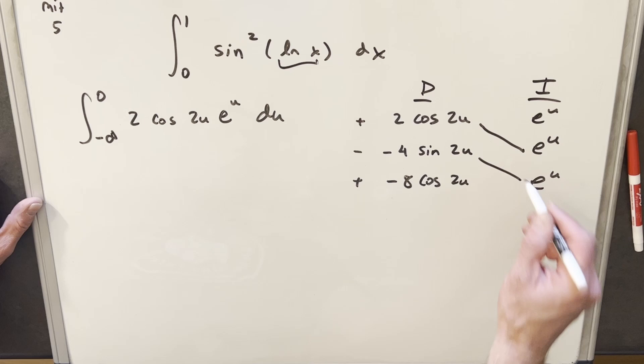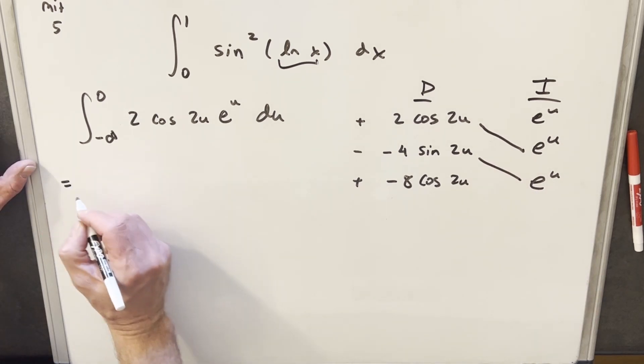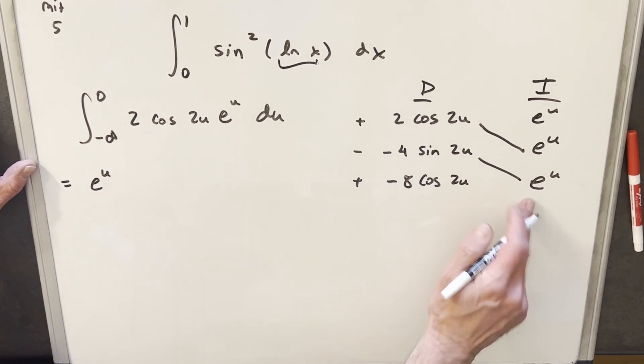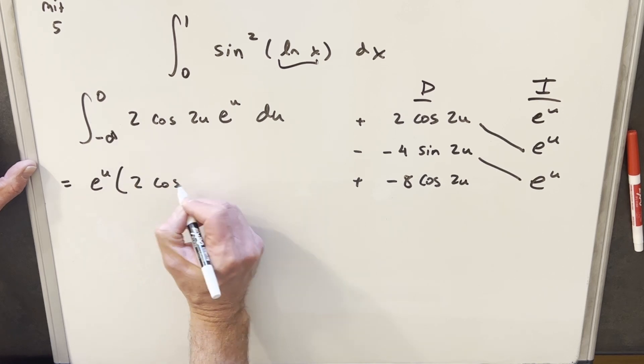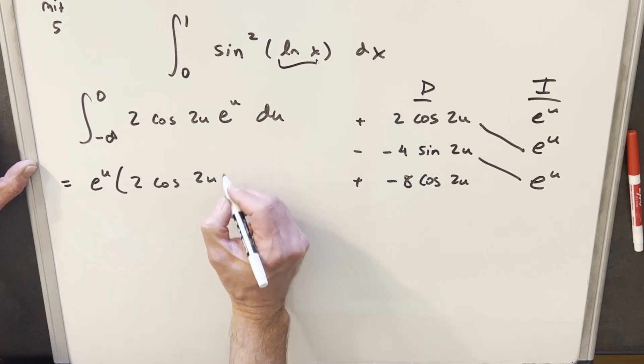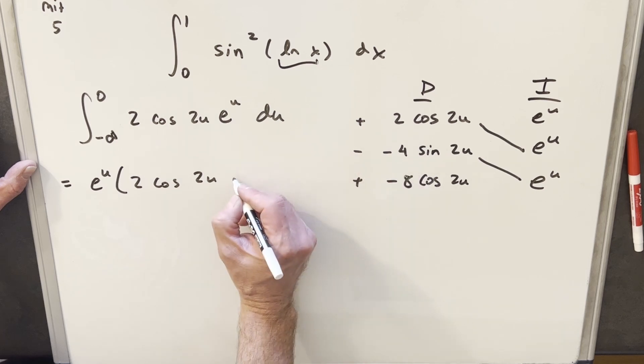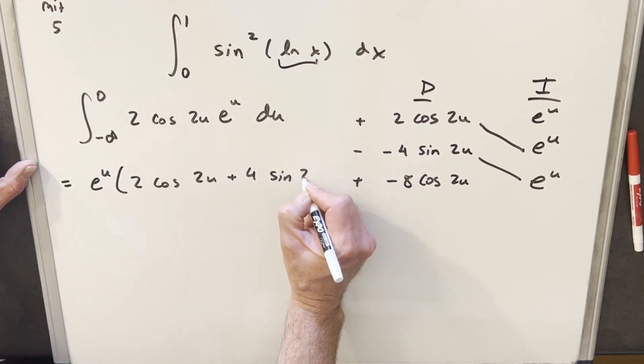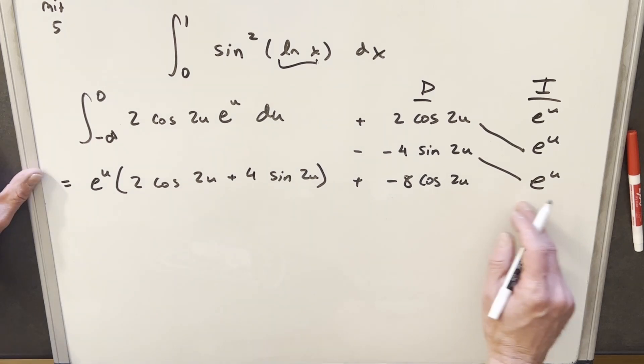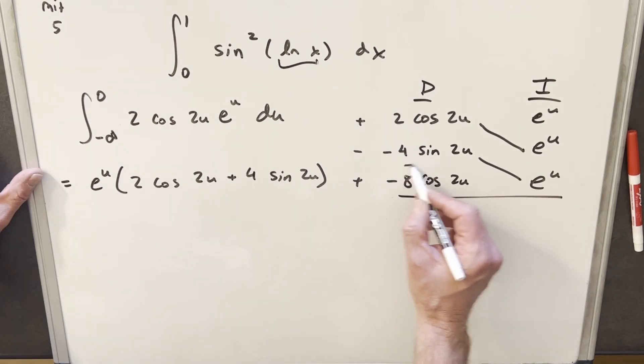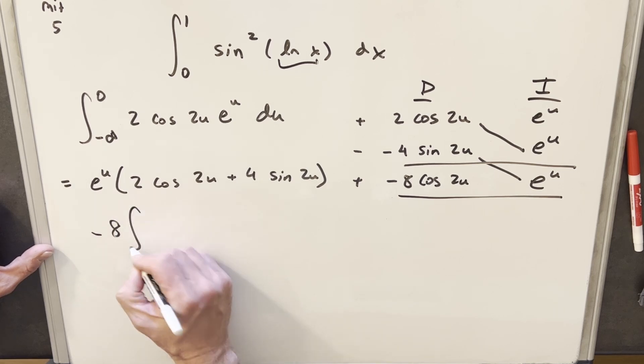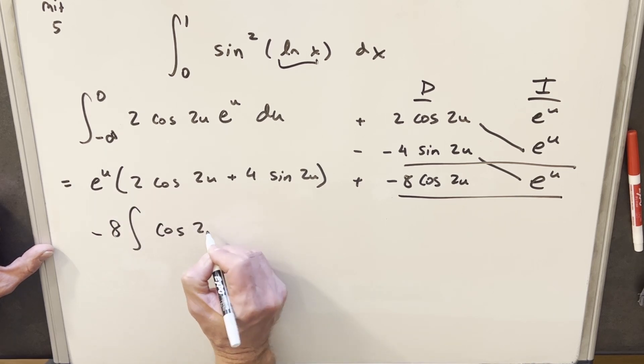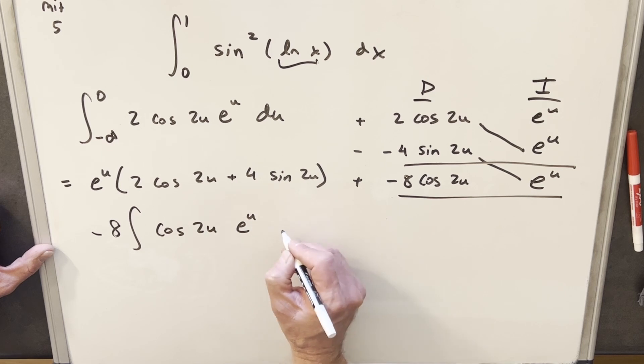And then doing the same thing we did previously, we're going to have some of our answer right here. So let's write that out. I'm just going to factor out an e to the u because we have it in both terms. And then we're going to have 2 cosine 2u. And then here, minus times minus is plus, so we're going to have plus 4 sine 2u. And then here, this piece is going to be an integral. So here we have a minus 8 integral of cosine 2u e to the u du.